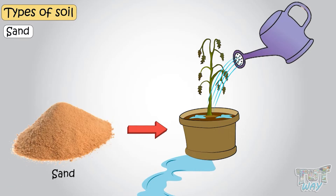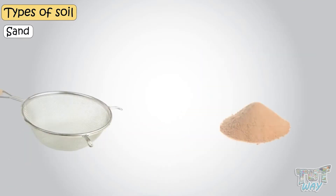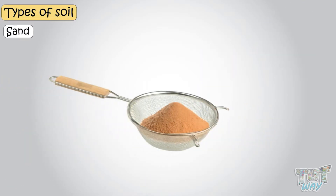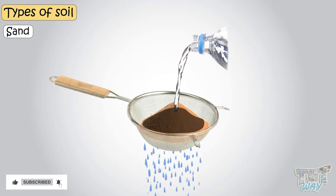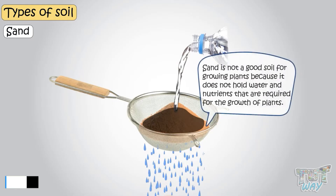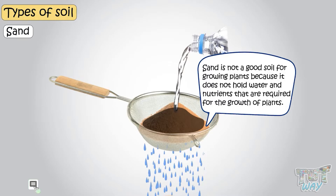Take some sand in a strainer and add water. Water will easily drain through the sand. So sand is not good soil for growing plants, because it does not hold water and nutrients that are required for the growth of plants.